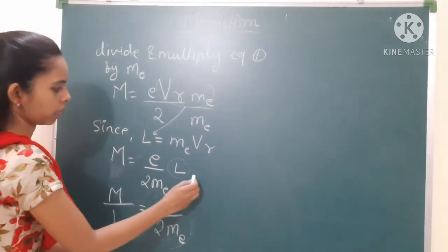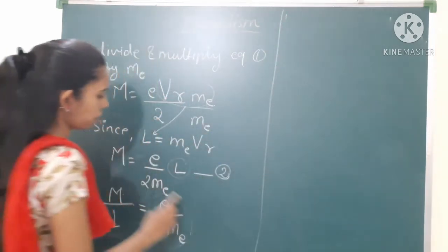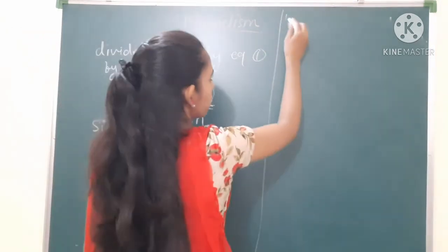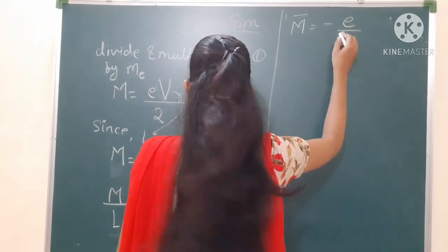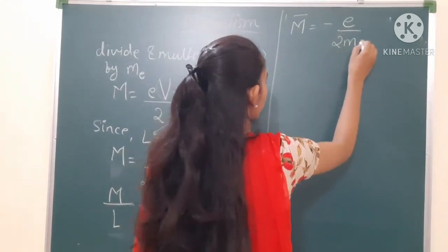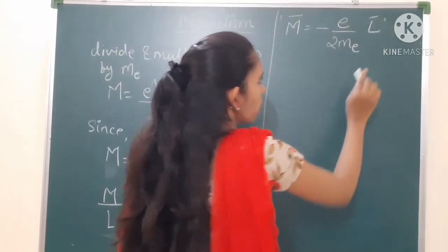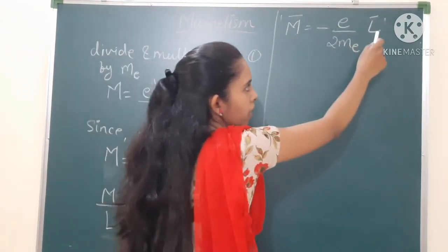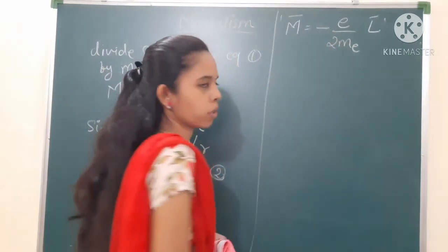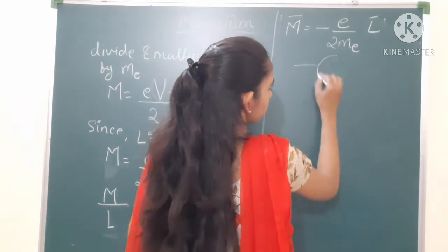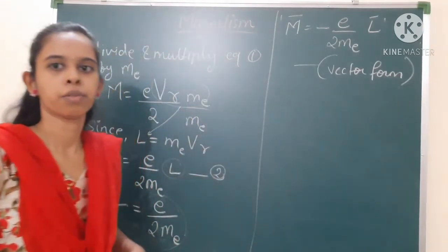This is equation number 2. If we write this term in vector quantity form, it becomes M⃗ = −(e/2m)·L⃗. The minus sign tells us that the magnetic moment and the angular momentum are in opposite directions. That is why the minus sign appears here. This is the vector form of the equation.